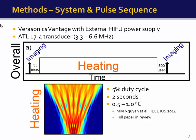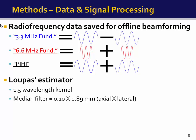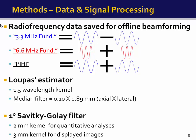The heating beam was driven at a five percent duty cycle over two seconds, resulting in a temperature rise of 0.5 to 1 degree Celsius. RF data was saved for offline beamforming. The 3.3 MHz data was the difference between the two phase-inverted 3.3 MHz signals, the 6.6 MHz data was the sum of the two in-phase 6.6 MHz signals, and the pulse inversion data was the sum of the two phase-inverted 3.3 MHz signals. We used Loupas's estimator to track displacement with a 1.5 wavelength kernel.